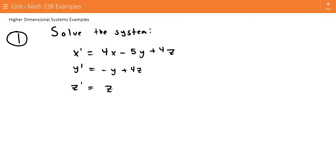This is the example video for higher dimensional systems. For our first problem, we want to solve the system x prime equals 4x minus 5y plus 4z, y prime equals negative y plus 4z, and z prime equals z.